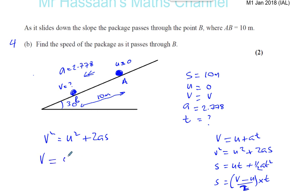We don't know what v is, we have to find it. u is zero, and a is 2.778, and s is 10 meters. So we can find what v is. That's v squared.